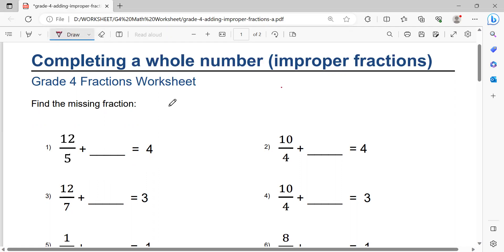20 minus 12, 20 minus 12 equals 8. So you're writing here 8 over 5. That's the solution.